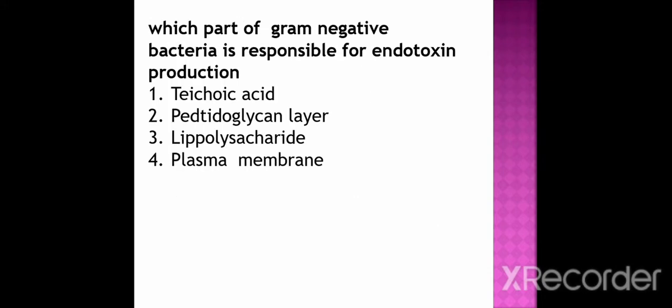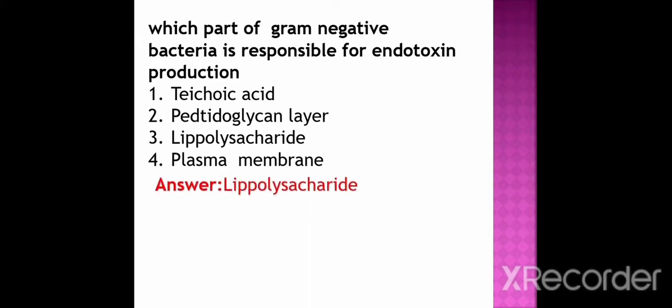Which part of gram-negative bacteria is responsible for endotoxin production? Option 1 is teichoic acid, option 2 peptidoglycan layer, option 3 lipopolysaccharide, and option 4 is plasma membrane. The correct option is lipopolysaccharide.